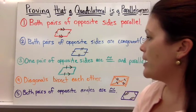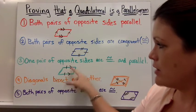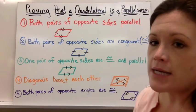Number three is one pair of opposite sides are both congruent and parallel. So they indicate that with the tick mark and the arrow. So one side is both.